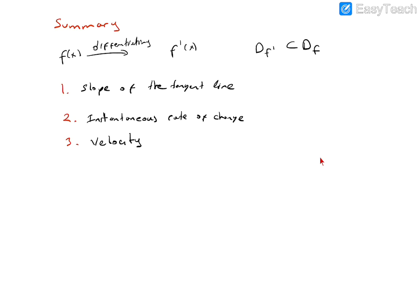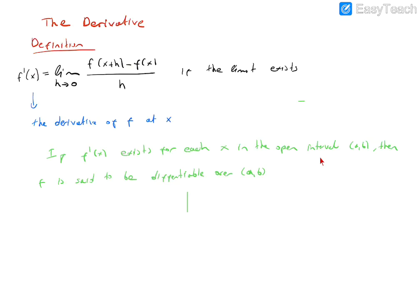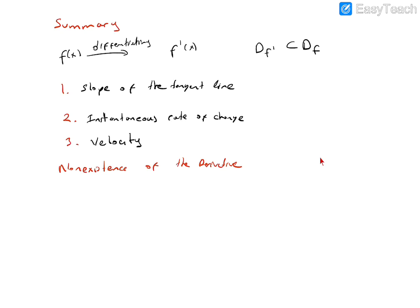So sometimes when this limit does not exist, let's talk about non-existence of the derivative. The existence of a derivative at x equals a depends on the existence of the limit. If the limit does not exist at x equals a, we say the function f is non-differentiable.